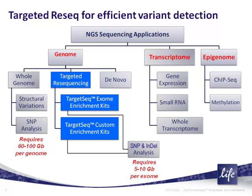Today we'll be talking about our product, TargetSeq Exome Enrichment Kits, which enable through hybridization pulling out just the subset of human genomic DNA associated with exons for in-depth analysis to discover small variants — SNPs and indels. Importantly, this reduces the amount of sequencing required by 10 to 20-fold, so a single genome requires only about 5 to 10 gigabases of raw sequencing data.